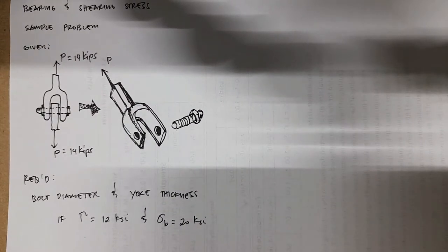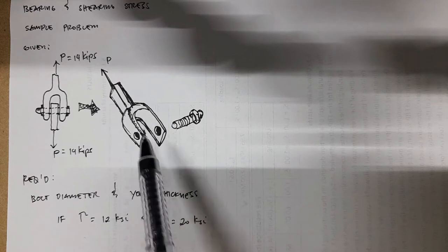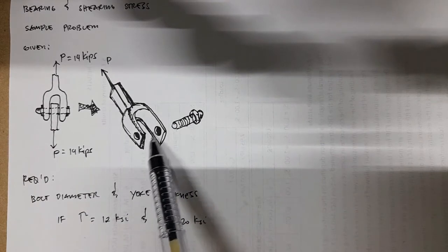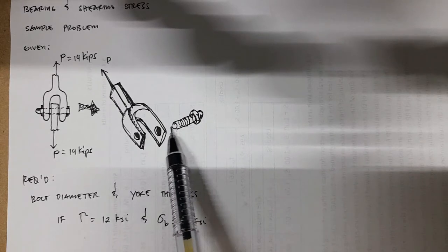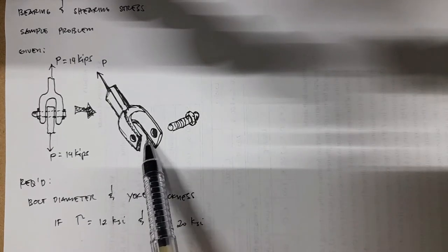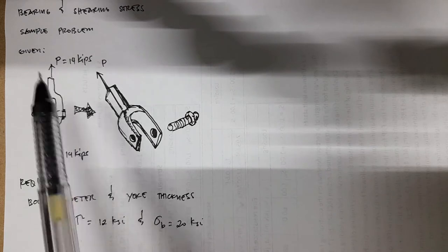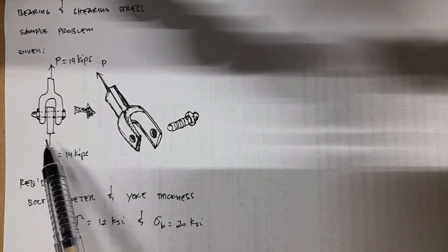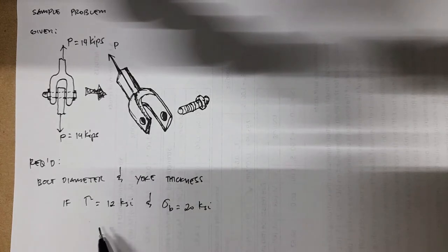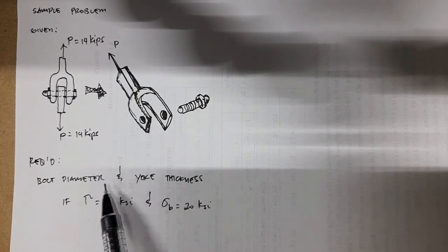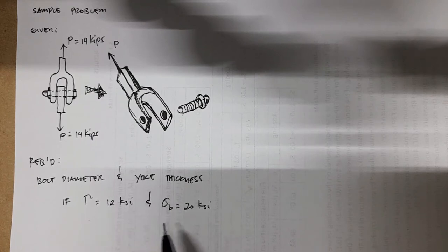This is a combination of bearing and shearing stress. We have here what we call a clevis. Isometrically, it's just like this — this is the bolt, and you insert it in the holes where it will be held in place. It's subjected to a 14-kip tensile load. We're asked to find the bolt diameter and yoke thickness if the limiting shear stress in the bolt is 12 ksi and the limiting bearing stress in the yoke is 20 ksi.